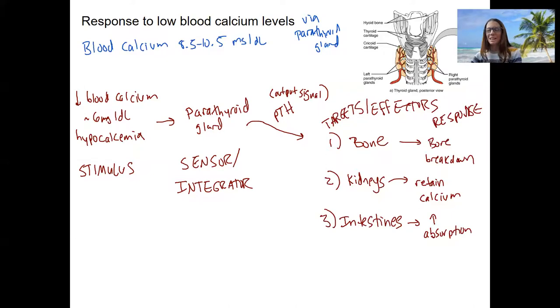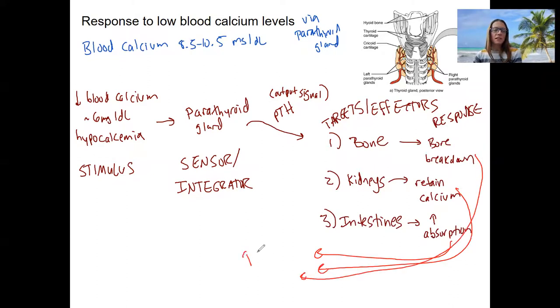So all three of those responses are doing what? Increasing plasma calcium in the blood. That's what we want to do. That is negative feedback because it's turning off the system. PTH will be lowered in response to this effect, which shuts off the system, including PTH, parathyroid hormone secretion.